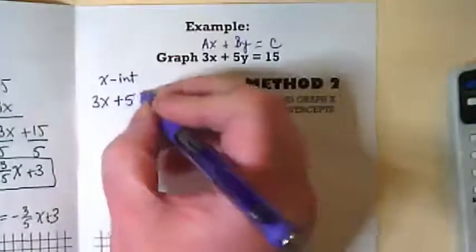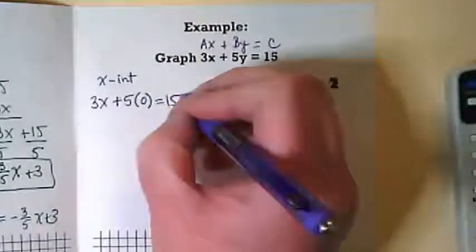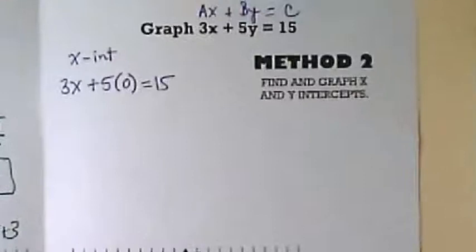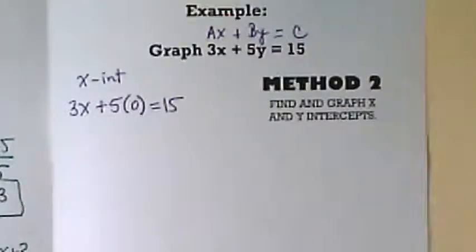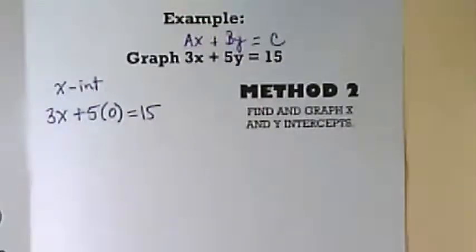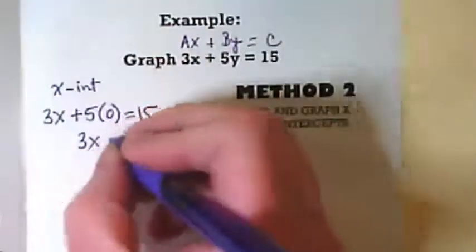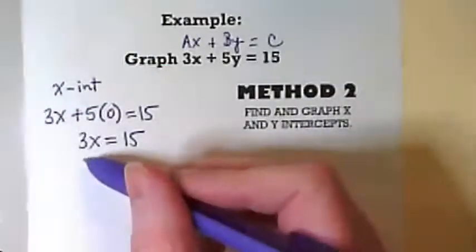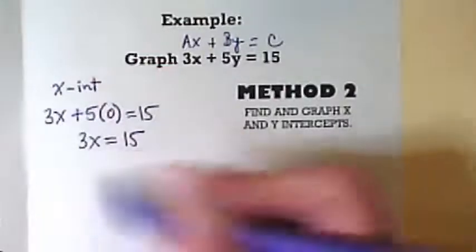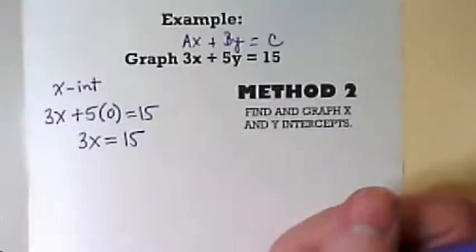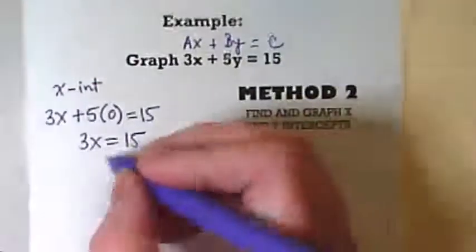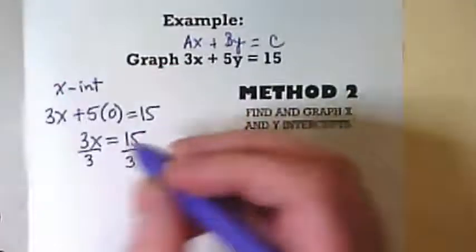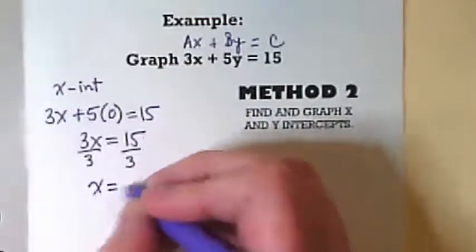We are going to rewrite this equation and plug in a 0 where the y is. 3x plus 5 times 0 equals 15. What happens when I do 5 times 0? We get a 0. So we can just rewrite this as 3x equals 15. What's my next step if I have 3x equals 15? Divide by 3. Yep, divide by 3. And this says x is equal to 5.